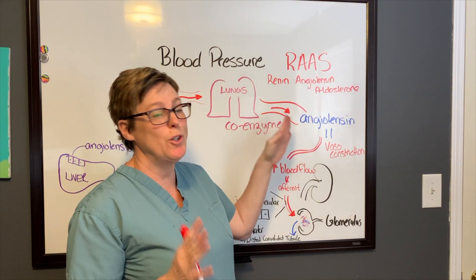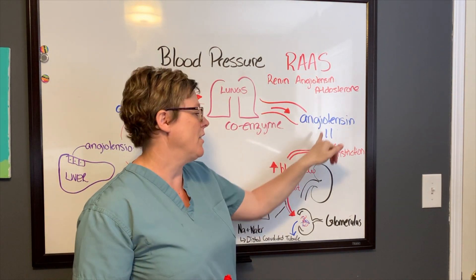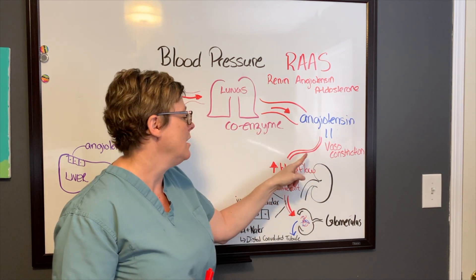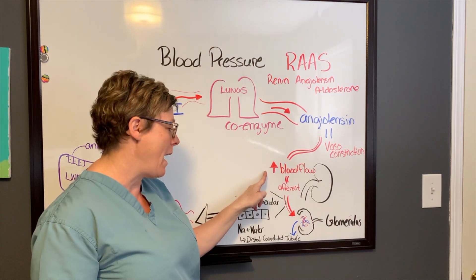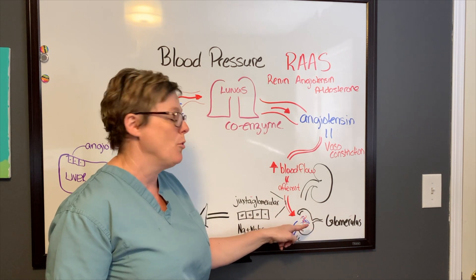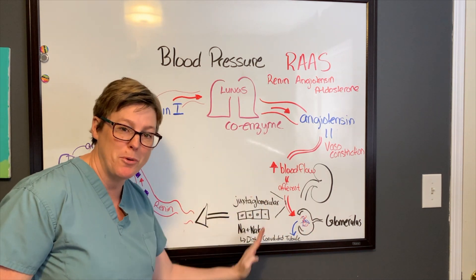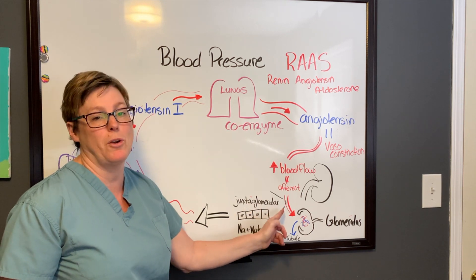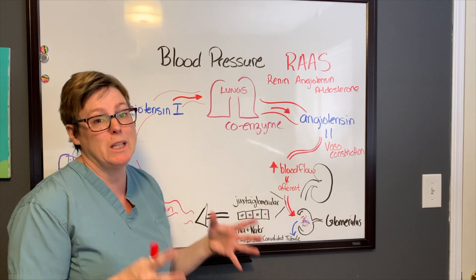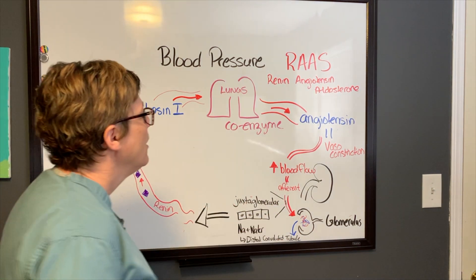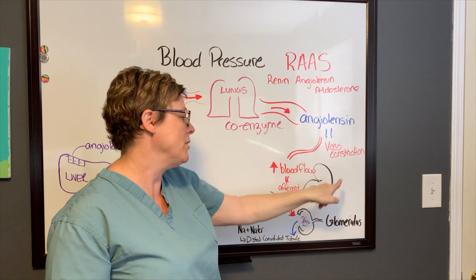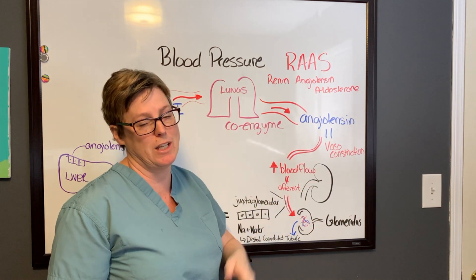When angiotensin 2 hits its target cells, it's going to cause vasoconstriction. That's really important because it will narrow those arteries and increase blood flow back into the afferent arterioles traveling to the kidneys, which will stop this process — because now the juxtaglomerular cells have identified increased pressure and there's no need to release renin. That takes care of the renin and the angiotensin. Where does the aldosterone come in? Aldosterone is part of the kidneys, so we're going to take a look at that next.